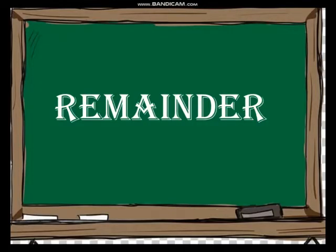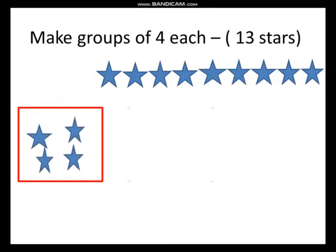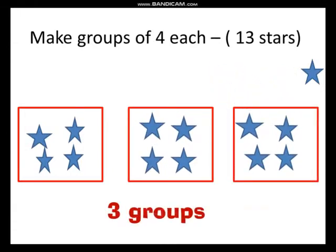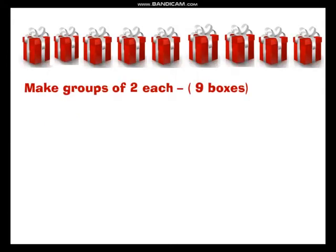Let us try to understand what a remainder is. In this example we are taking 13 stars and we have to make groups of four each. When we group things we have to keep an equal number in each group. We are able to make three groups of four stars each, but this one star is left over — and this is our remainder. We cannot group it equally, so this leftover is called the remainder.